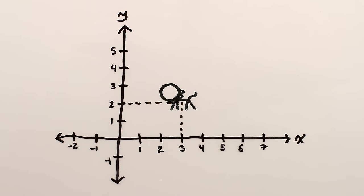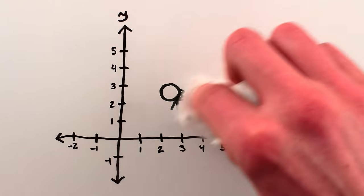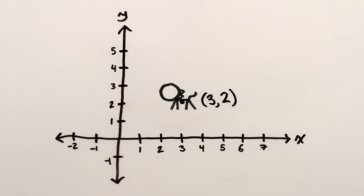You're probably familiar with specifying the position of a cat on a plane using xy coordinates. This cat is three tick marks to the right of our point of reference, and two tick marks up, so we say it's at position x equals three and y equals two, which typically gets written as just a pair of numbers like three comma two.